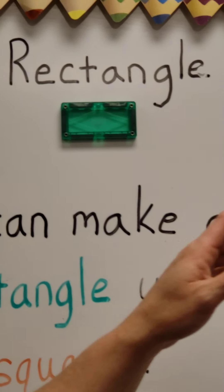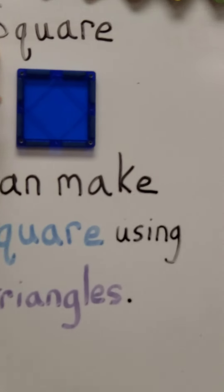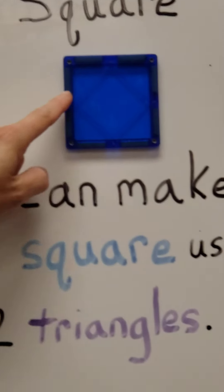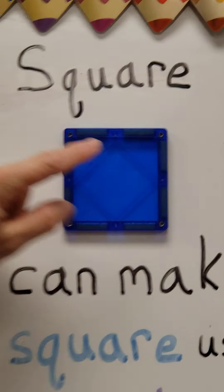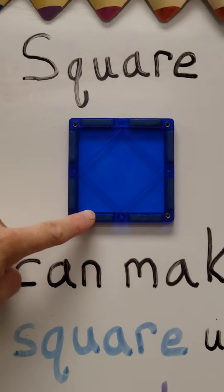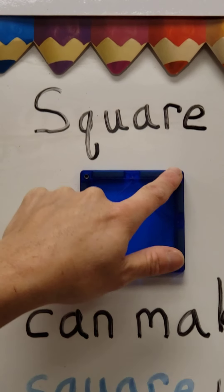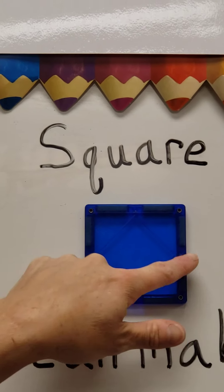Then we're going to take a look at a square. And a square also has four sides and four points or vertices. But all of these sides are equal.